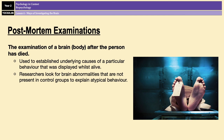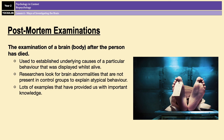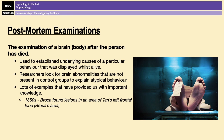One of the earliest examples of post-mortems for research purposes is Broca's work with his patient Tan. Tan displayed speech problems whilst he was still alive. After a post-mortem was carried out, it was discovered that Tan had damage in his left frontal lobe, an area now known as Broca's area. As you may remember from the localization of function lesson, Broca's area is important for speech production. So that post-mortem gave us lots of information about areas of the brain involved in speech.